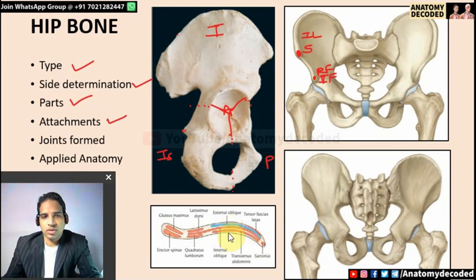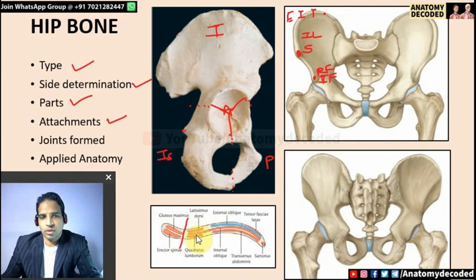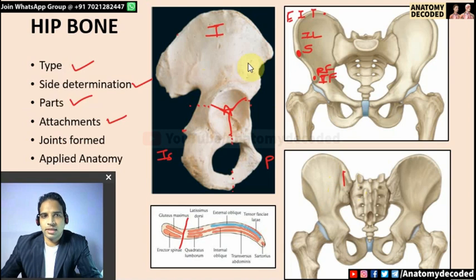The iliac crest has three parts: outer lip, intermediate area, and inner lip. In the anterior three-fourths, from outer to inner: external oblique, internal oblique, and transversus abdominis. On the posterior aspect: latissimus dorsi on the outer and quadratus lumborum on the inner. The dorsal segment has an outer sloping surface giving attachment to gluteus maximus, and an inner sloping surface giving attachment to erector spinae.